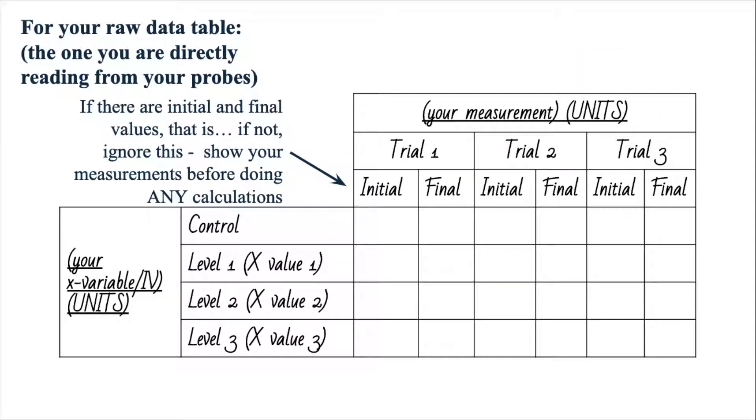Okay, here is our template that we have been using for the past couple of years. We have the control level one, two, and three, and then on the left you need to write your x variable, and then on the top you've got to say your measurement or your y values for trials one, two, and three with initial and final values if you're taking the change of something or however you want to do it with your raw data. Just make it into a nice table, make equal lengths in the columns or widths, and then put it for trials one, two, and three.